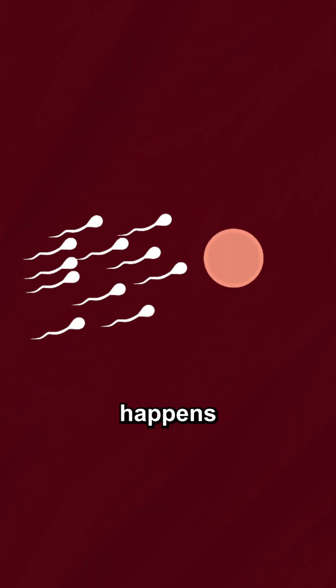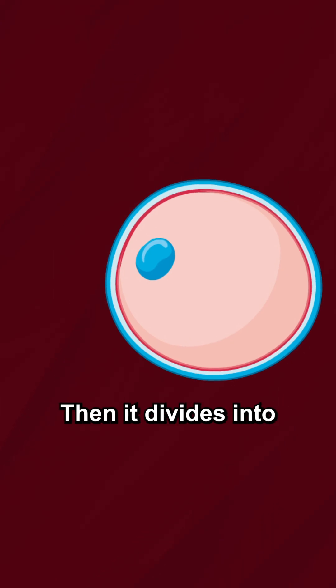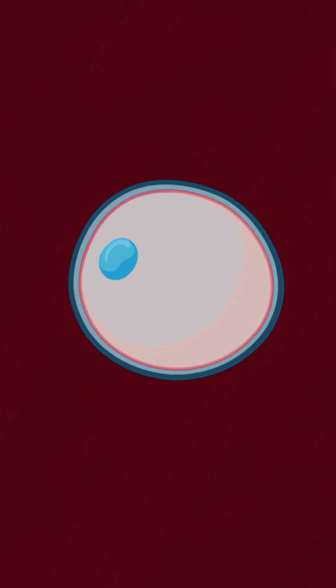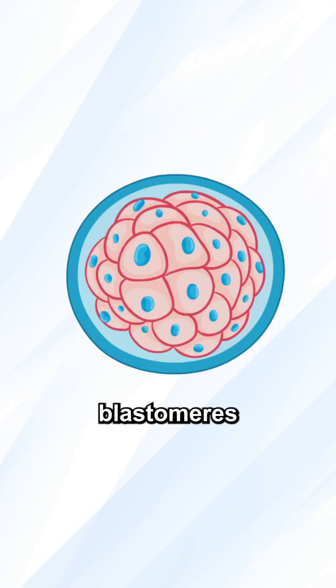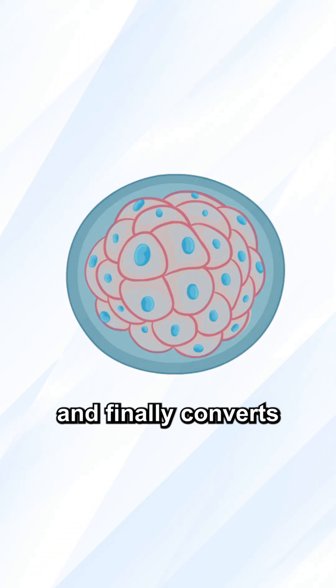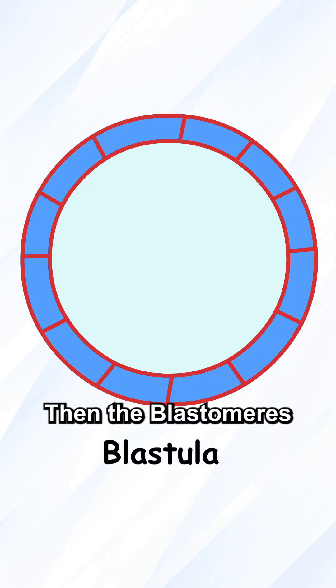First, fertilization happens and a zygote forms. Then it divides into 2, 4, 8-celled blastomeres, and finally converts into a structure called the blastula.